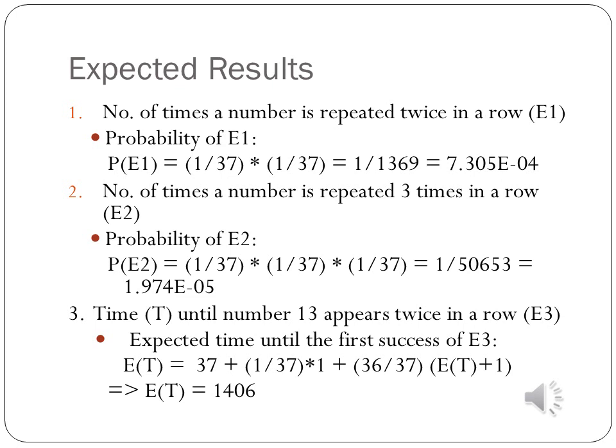The third event is how long it takes for a lucky number, say 13, to appear consecutively twice — that is, how many times must the roulette wheel be spun until number 13 turns up twice in a row. When we start spinning, we expect on average 37 spins until number 13 shows up. Once that happens, there is a 1/37 chance we will spin once more, and a 36/37 chance that we will be effectively starting all over again.